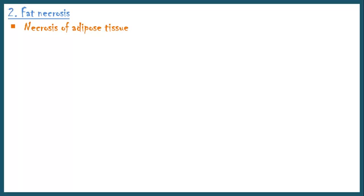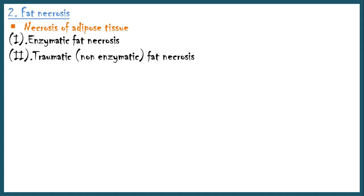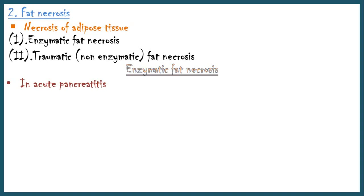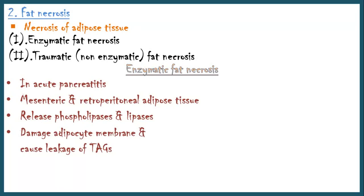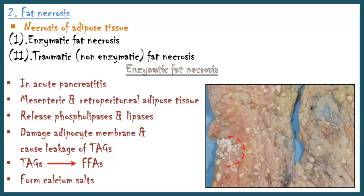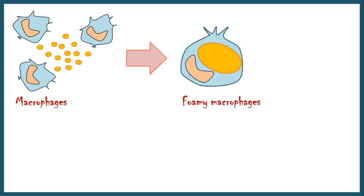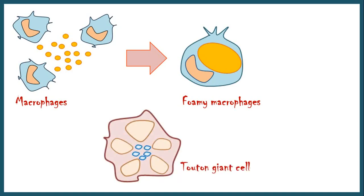The second special type is fat necrosis — the necrosis which occurs in adipose tissue. There are two types: enzymatic fat necrosis, and traumatic or non-enzymatic fat necrosis. Enzymatic fat necrosis is commonly seen in acute pancreatitis and other pancreatic injuries, causing fat necrosis in mesenteric and retroperitoneal adipose tissue. Damaged pancreatic acinar cells release phospholipases and lipases into surrounding tissues. The phospholipases damage cell membranes and cause necrosis of adipocytes and leakage of triglycerides. Triglycerides are broken down into free fatty acids by lipases. These fatty acids combine with calcium ions to form calcium salts, deposited as chalky white plaques at the sites of necrosis in the peritoneal cavity. Macrophages engulf free triglycerides and become foamy macrophages, which can fuse together to form Touton's giant cells — though these are more prominent in traumatic fat necrosis.